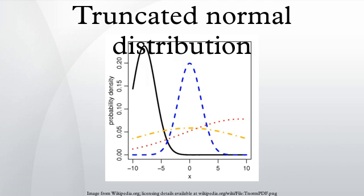The truncated normal distribution has wide applications in statistics and econometrics. For example, it is used to model the probabilities of binary outcomes in the probit model and to model censored data in the Tobit model.